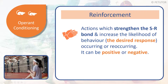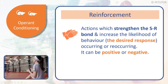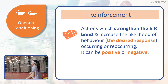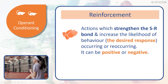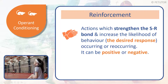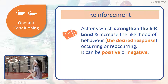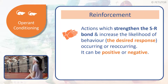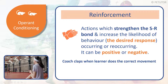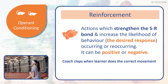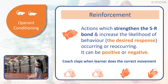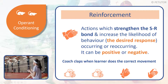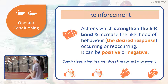The learner does the correct thing and the coach claps, because we want to strengthen the stimulus and response bond — they carried out the desired response and we want them to do that again. Reinforcement can be positive or negative. What we're looking at in the video is positive reinforcement, where the coach claps when the learner does the correct movement. We'll look at negative reinforcement in a separate video.